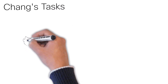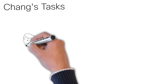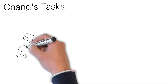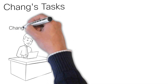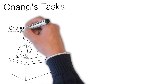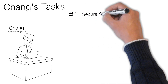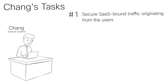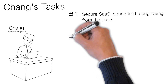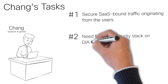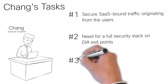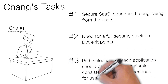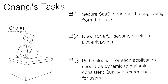Finally, let's look at Chang, a network engineer at a financial services firm wherein security is of utmost importance. This firm also focuses on SaaS application user flow towards the cloud. However, they cannot compromise on security. Hence the following tasks. Number one: all SaaS-bound user traffic must be secured. Number two: DIA exit points must be equipped with a full security stack. Number three: the path selection for each application should be dynamic to maintain consistent quality of experience for users.